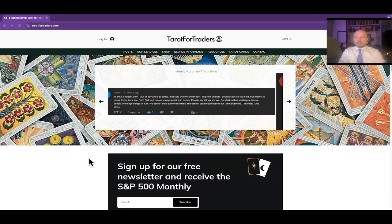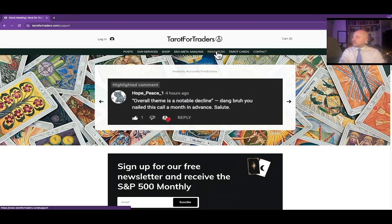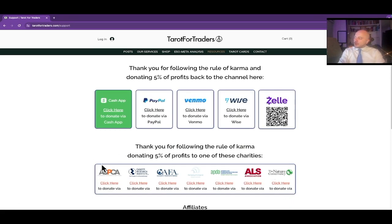The whole purpose of the channel is to transmute some of the competitive energy of the stock market into goodwill. We do that by following the rule of karma for the channel. You go to the resources tab of our website, Tarot for Traders, and 5% of the profits from every profitable trade utilizing this information should be donated forward to one of these charities, or pick a charity of your choosing as long as you're paying 5% forward.